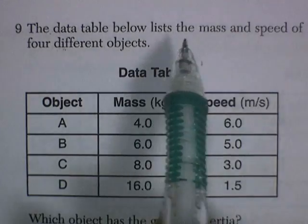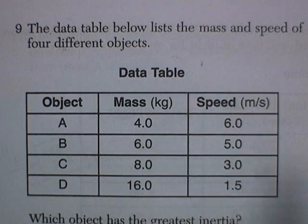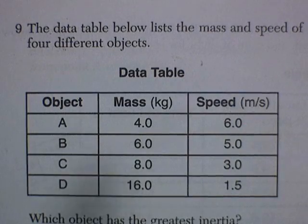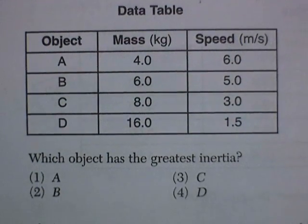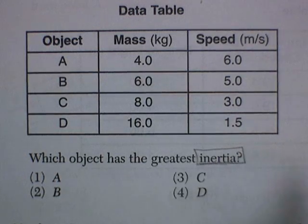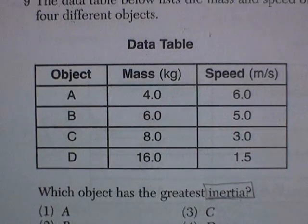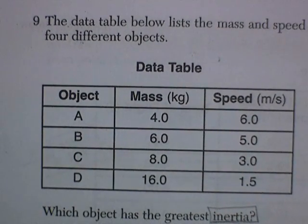The data table lists the mass and speed of four different objects. We could find all sorts of things about that, but what are they asking for? The object with the greatest inertia. Inertia is a measure of mass only. So we're really looking for the thing with the greatest mass, which would be choice D.